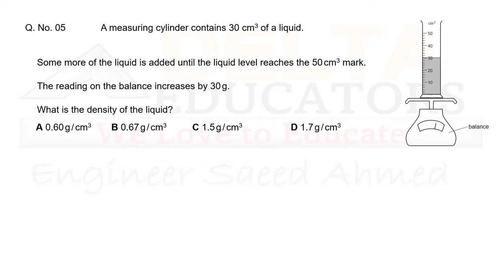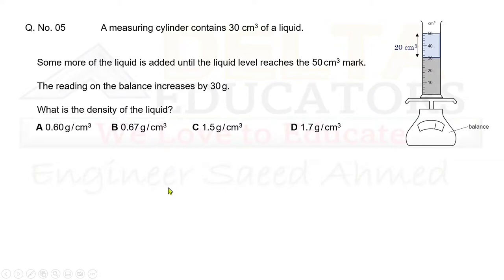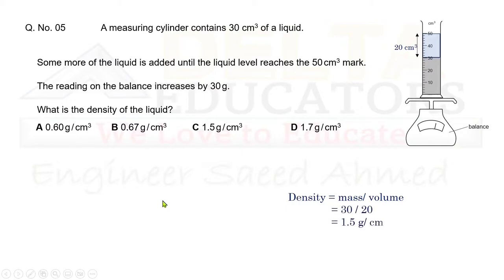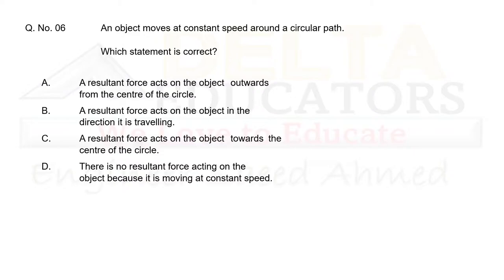Question 5: A measuring cylinder contains 30 cm³ of liquid. More liquid is added until the level reaches 50 cm³, so we added 20 cm³. The balance reading increases by 30 g. To find density, we use density = mass ÷ volume = 30 g ÷ 20 cm³ = 1.5 g/cm³. 1.5 g/cm³ is given in option C, so the correct option is C.